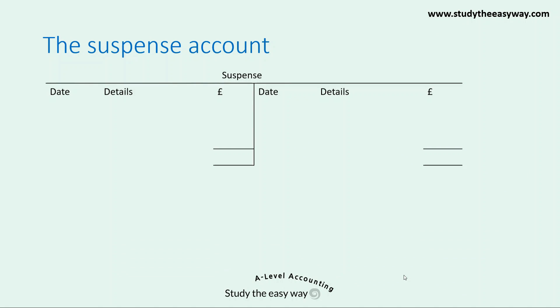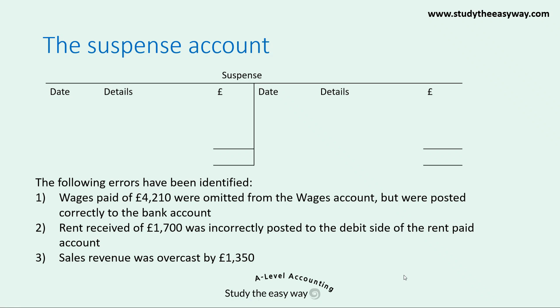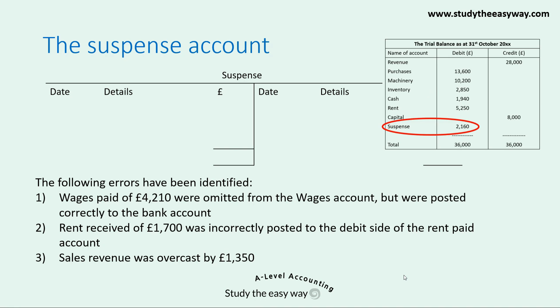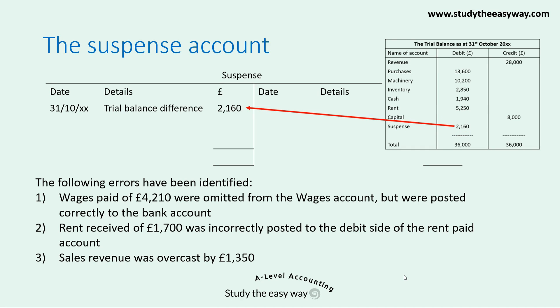Let's continue now by turning our attention to the suspense account itself, continuing with the example we started previously. We'll be correcting some identified errors, showing how the suspense account is affected by these corrections, and finally showing that the suspense account balances. From our trial balance, we needed to include a suspense account with a debit balance of £2,160. We now show that on the debit side of the suspense account, recorded in the details column as 'trial balance difference', which is the standard way of showing this.